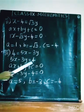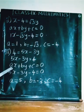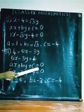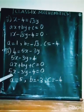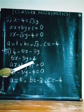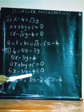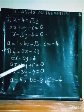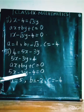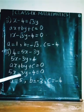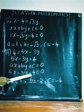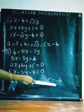After rearranging, transposing 5X minus 3Y to LHS and 4 to LHS, the equation can be written as 5X minus 3Y minus 4 equal to 0. Comparing with the general form: A equals 5, B equals minus 3, and C equals minus 4.